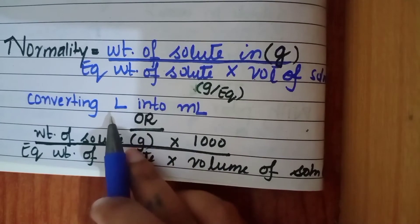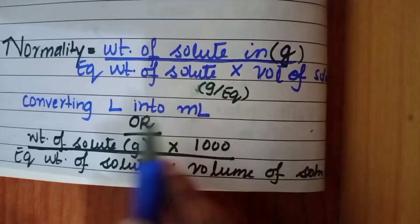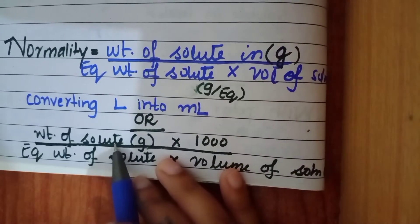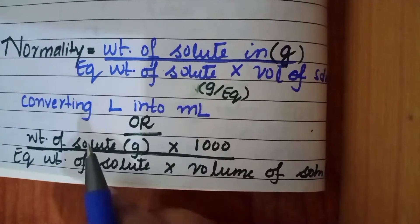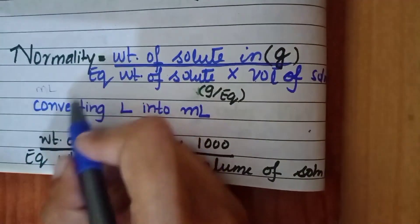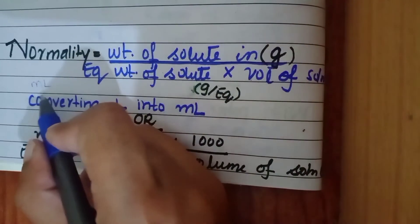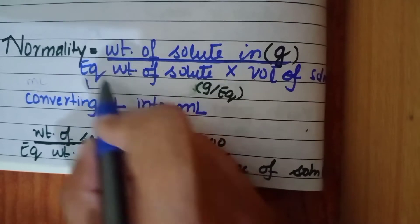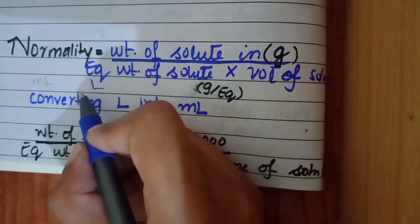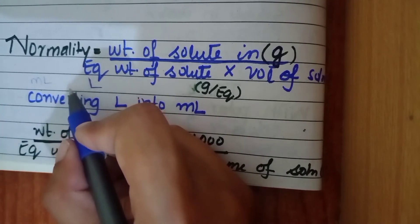There is another formula for normality as well in which we are going to convert liter into milliliter. Technically converting liter into milliliter, at times it's very difficult to remember what exact operation one has to do for conversion of liter into milliliter.